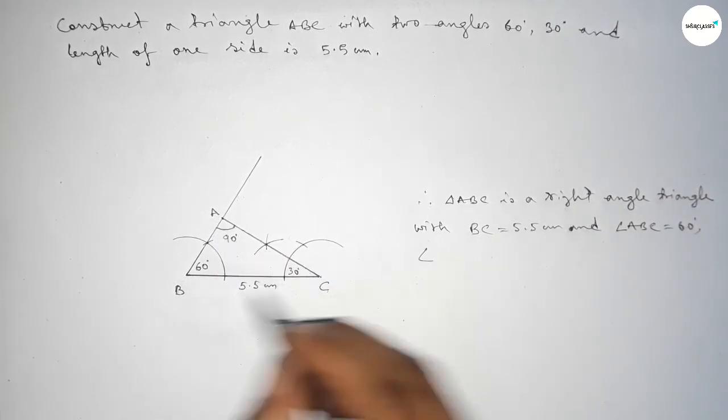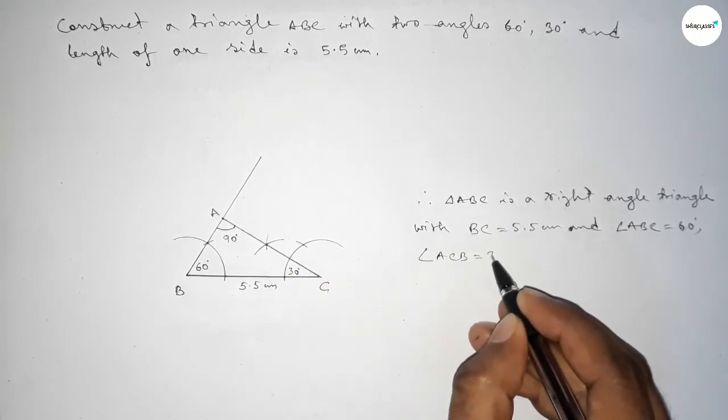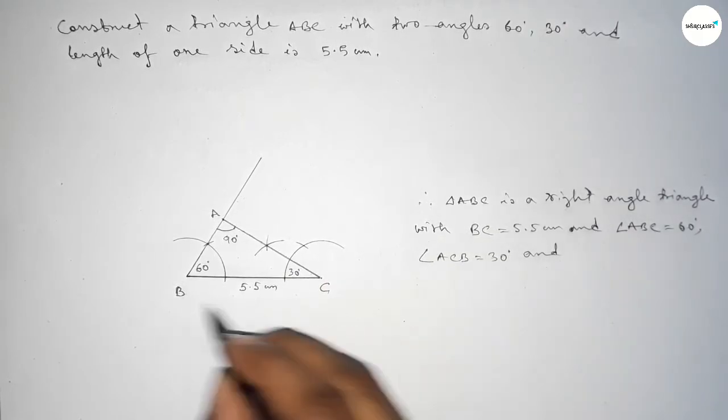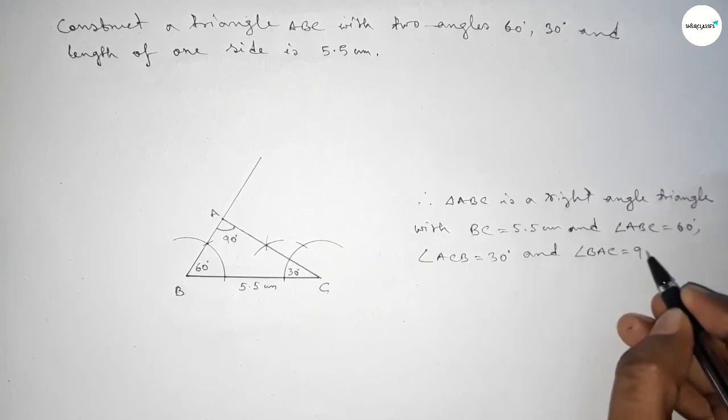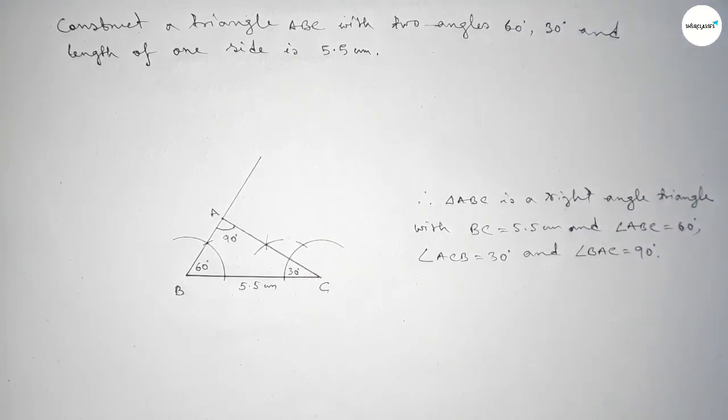And angle BAC equals 90 degrees, since 60 plus 30 equals 90, and 90 plus 90 equals 180.